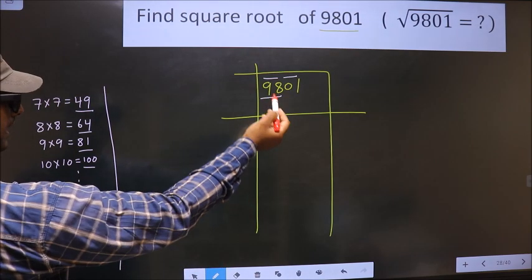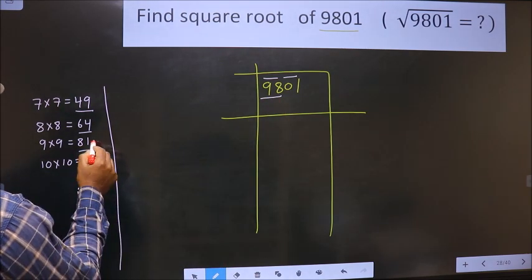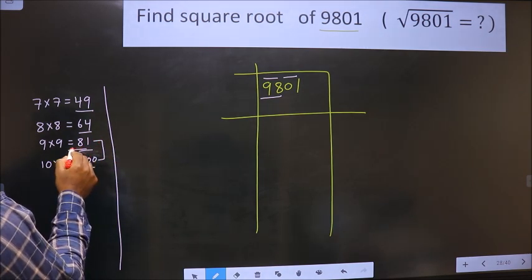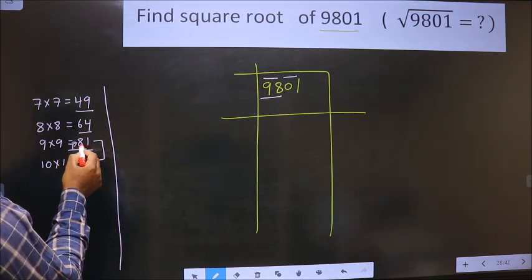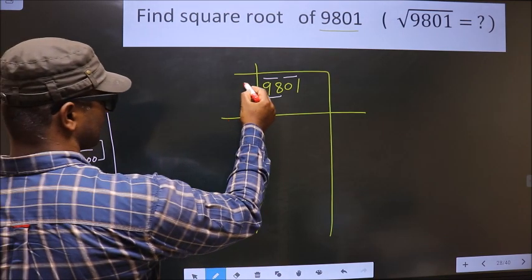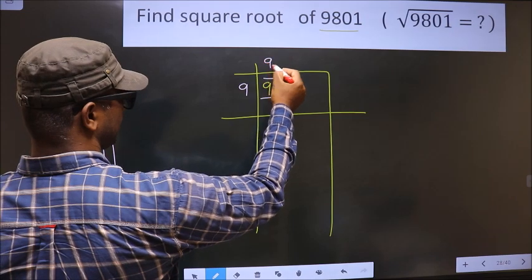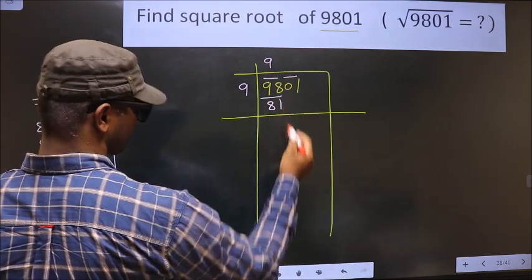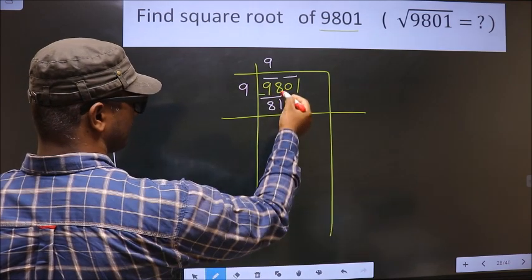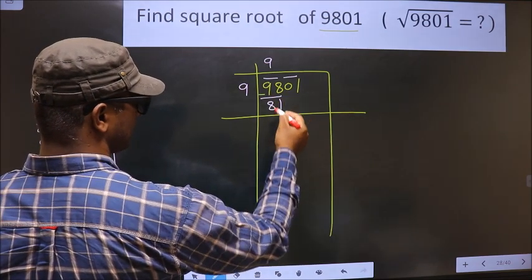Here we have 98. It lies between these two numbers. So we take the smaller number, that is 81. 81 is for 9 times 9. So 9 times 9, 81. Now we should subtract. 8 minus 1, 7; 9 minus 8, 1.